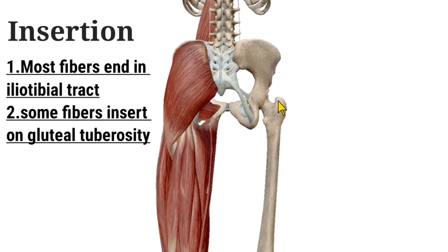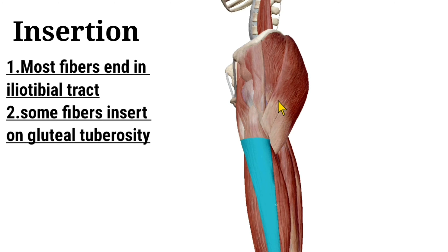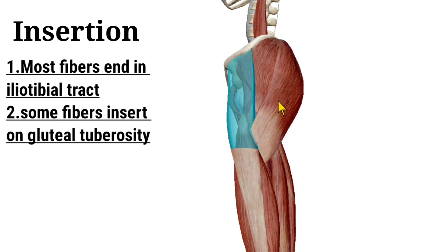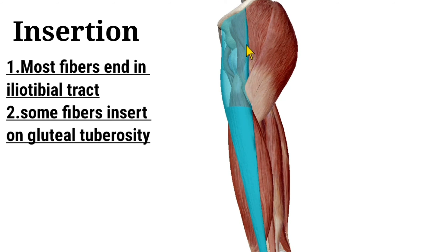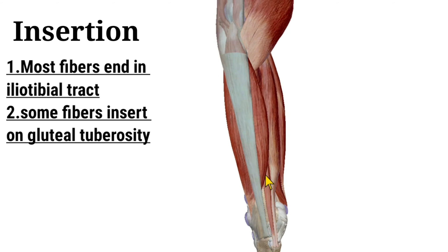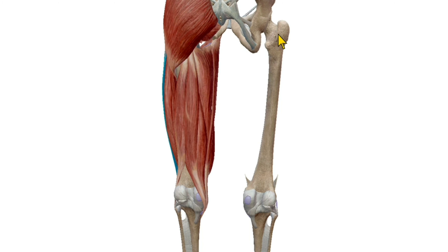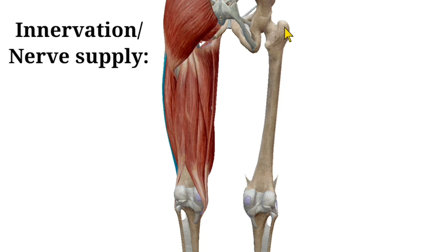About the insertion of the gluteus maximus muscle: most fibers insert into the iliotibial tract. Here is the tensor fascia lata — this structure is the iliotibial tract, running from the ileum to the tibia. Most fibers of the gluteus maximus are inserted into the iliotibial tract, and some fibers are inserted into the gluteal tuberosity of the femur.